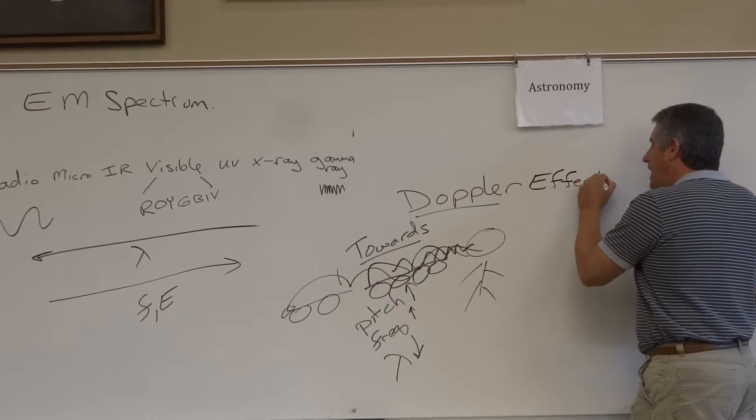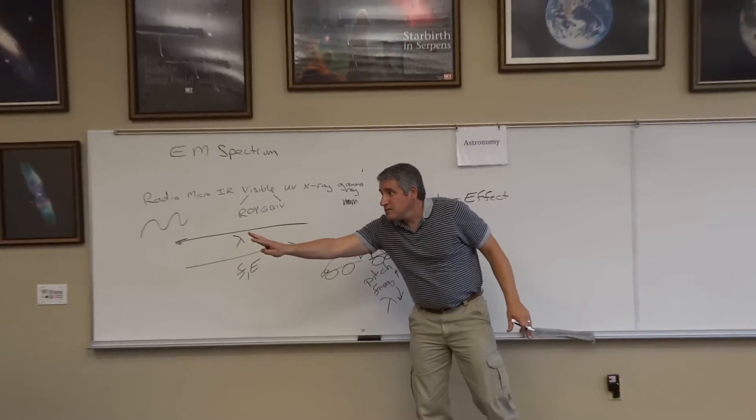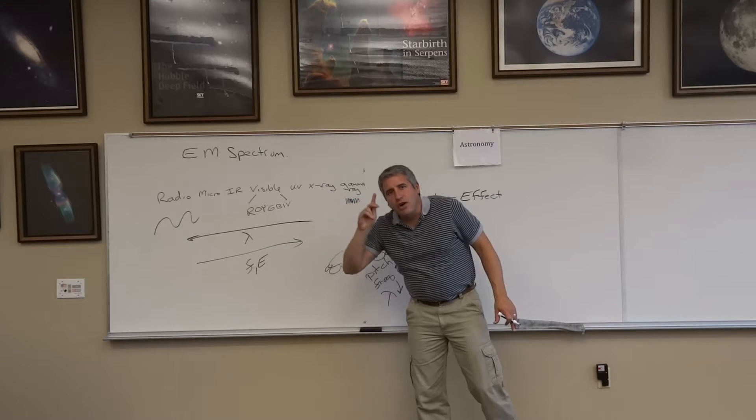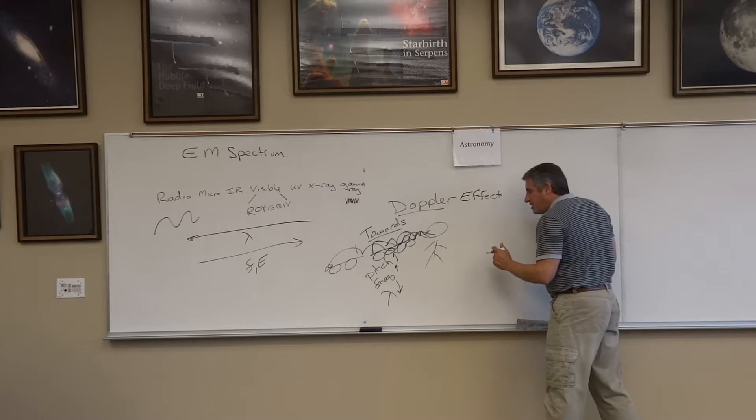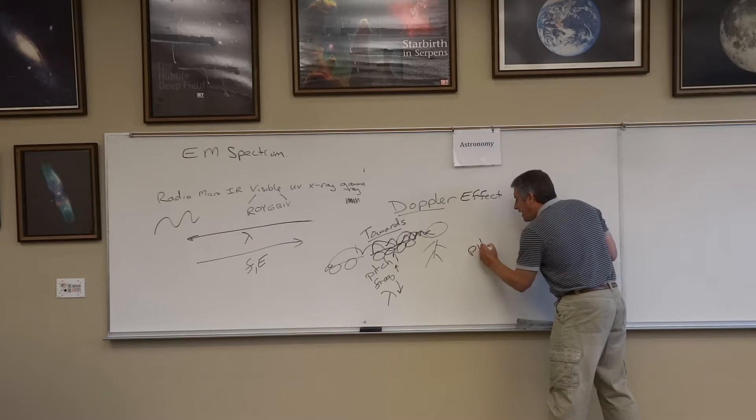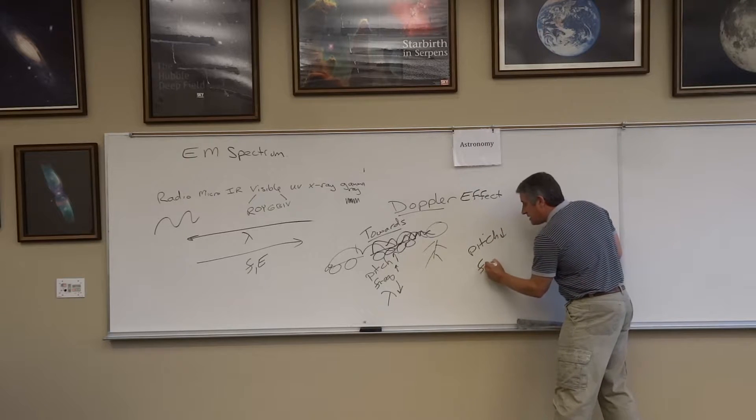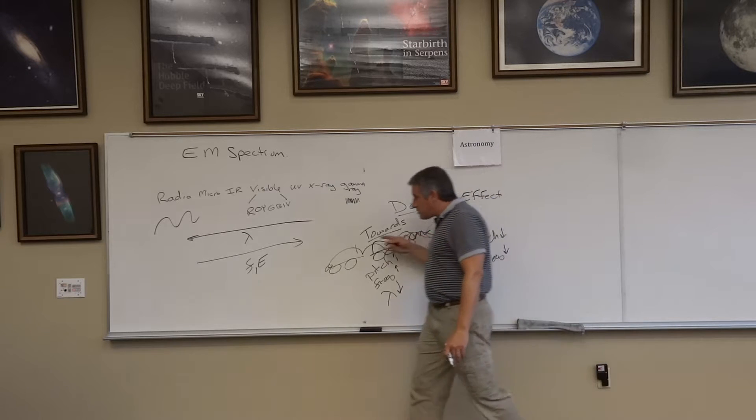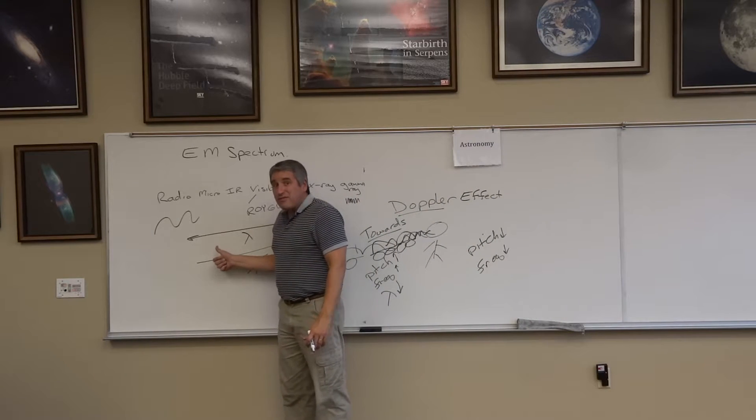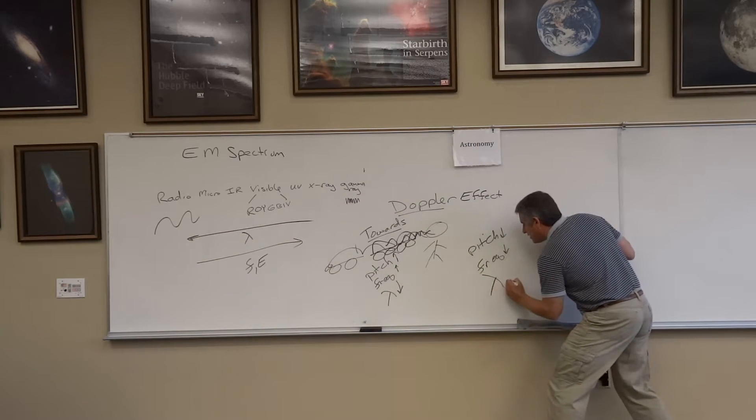As the car moves by, not only does the volume decrease, but we hear a decrease in the pitch. So as the car moves by, the pitch decreases. Therefore, the frequency must be decreasing. What does that have to do with wavelength? Well, if frequency is going down, wavelength must be going up.